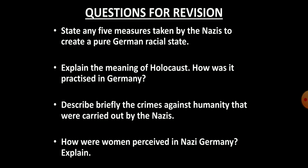Now there are some questions for revision. State any five measures taken by Nazis to create a pure German racial state. Second, explain the meaning of Holocaust and how it was practiced in Germany. Third, describe briefly the crimes against humanity carried out by the Nazis. Fourth, how were women perceived in Nazi Germany? Hope you liked this presentation and found it helpful. Thank you.